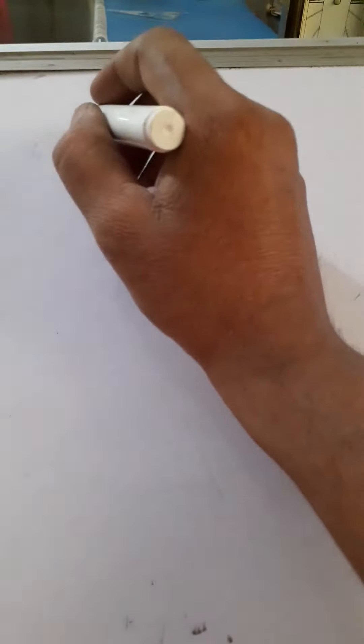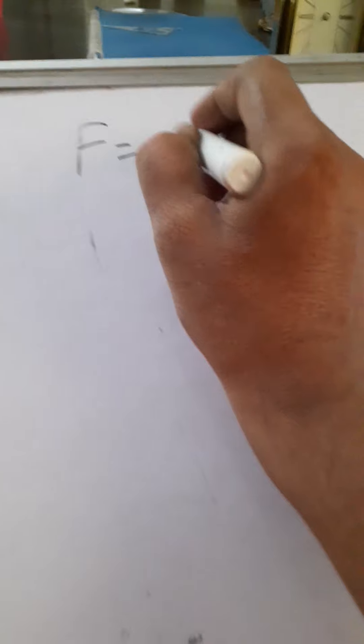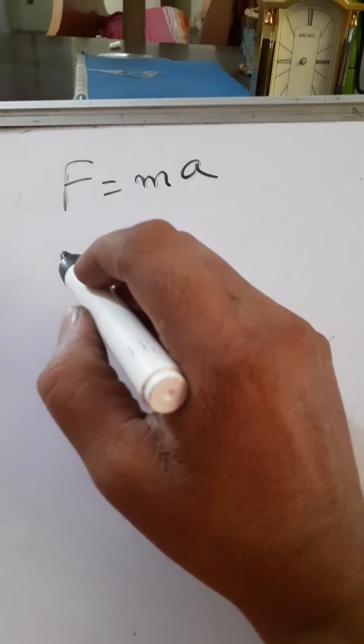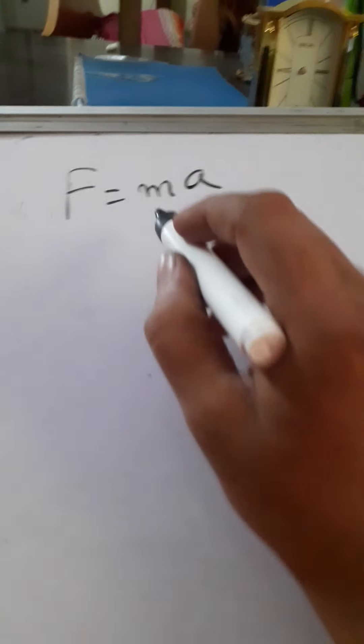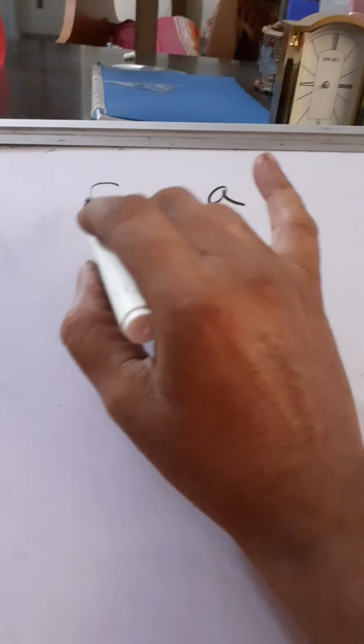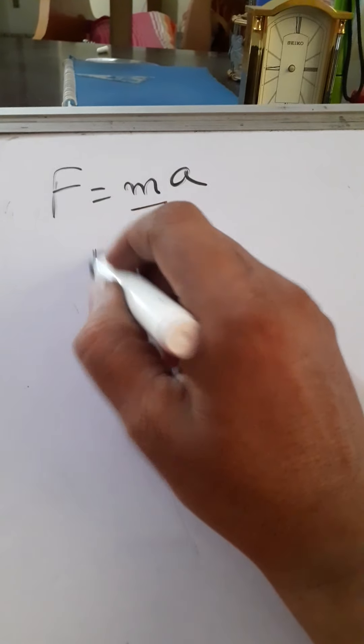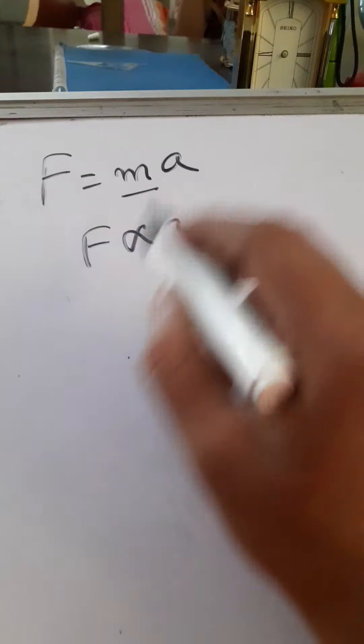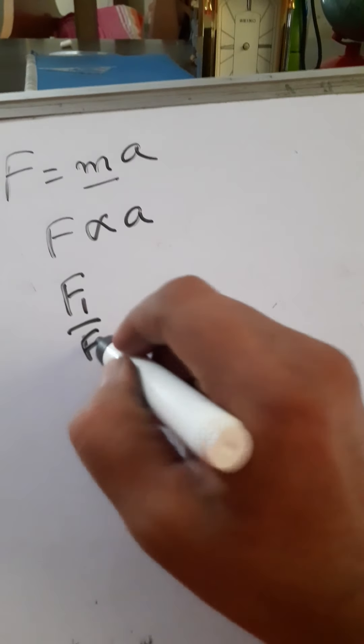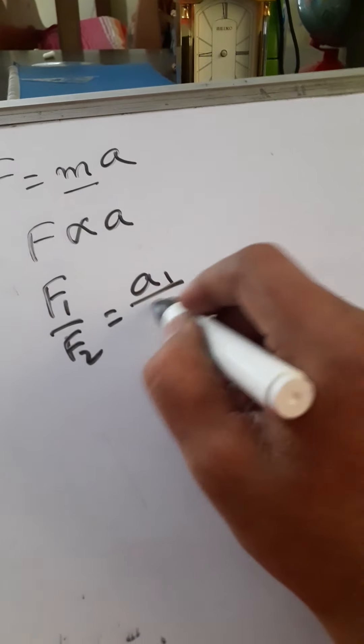Topic number 4 is Proportionals and Deriving Equations. For example, F equals MA. Which one is constant? Generally, mass of the body constant, force proportional to acceleration. Then F1 by F2 is equal to A1 by A2.